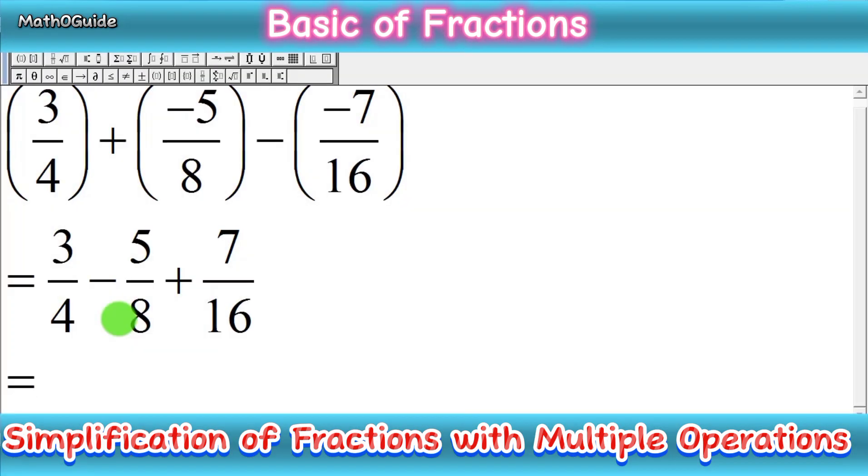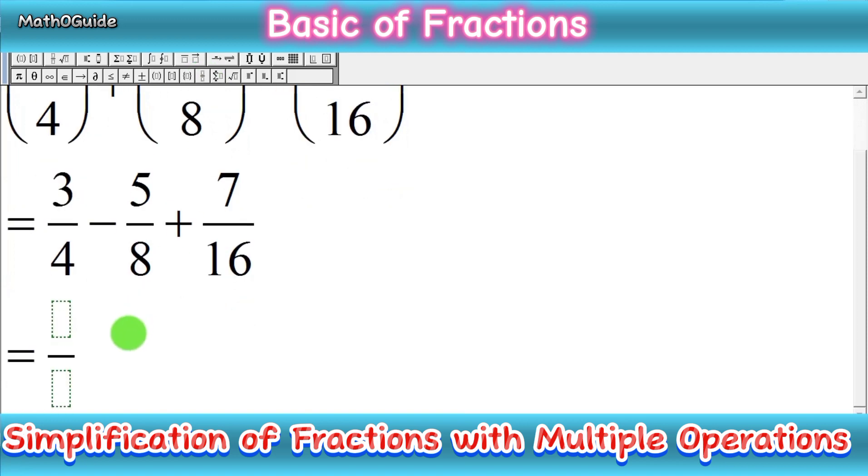The least common denominator of 4, 8, and 16 is 16. Now, divide 16 by 4 to get 4, then multiply this answer by the numerator of the first fraction.